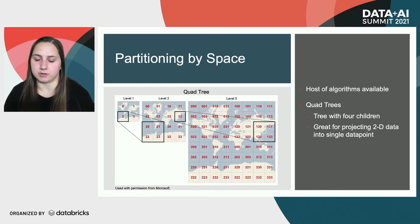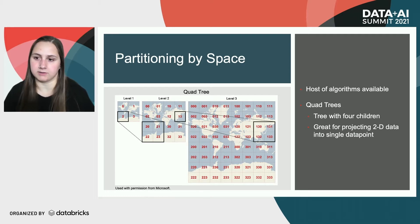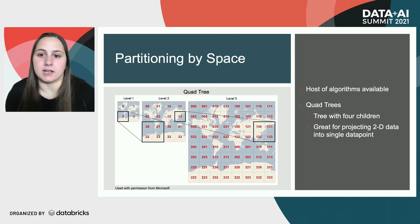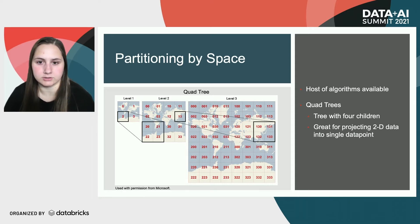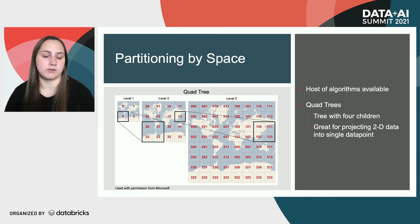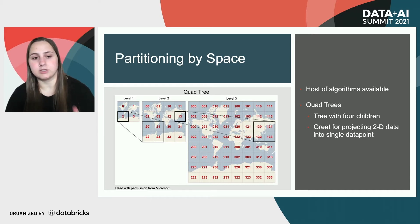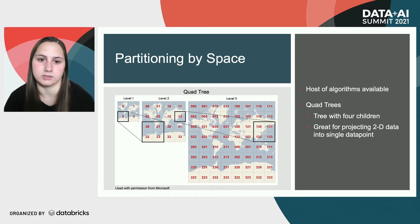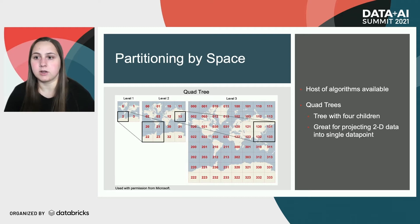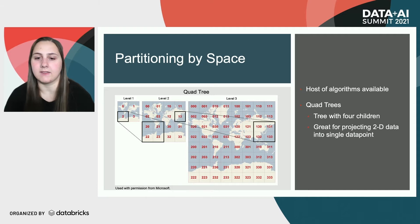Let's talk about how you can partition by space. There are a few different algorithms available, but the one we went with is called a quad tree. A quad tree, as you can probably get from the name, is just a tree with four children. At level one of the tree, we project the earth to be flat and then split it up into four quadrants. Each of those quadrants splits into its four children, which then itself splits into four children, and so on. As you get to higher and higher resolutions, the amount of geographic space within the quad key gets smaller and smaller, which makes it really good for projecting 2D data into a single data point.